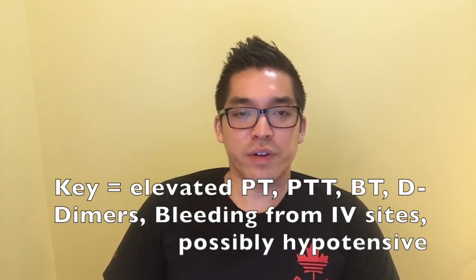DIC is the most extreme version of microangiopathic hemolytic anemia. Like TTP/HUS, you get thrombocytopenia from platelet consumption and schistocyte-associated hemolytic anemia. What distinguishes DIC is that it also consumes coagulation factors, causing elevated PT and elevated PTT. DIC patients spontaneously bleed from multiple sites including IV access sites and may be in shock.